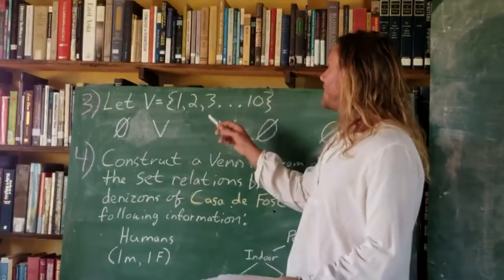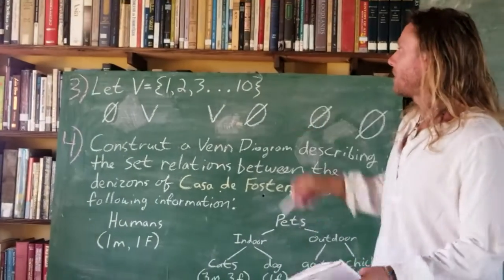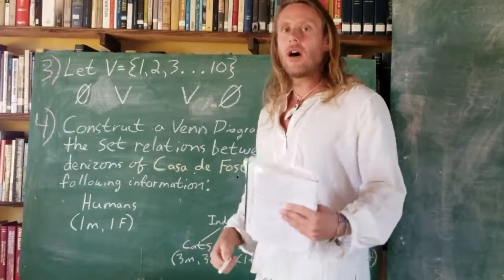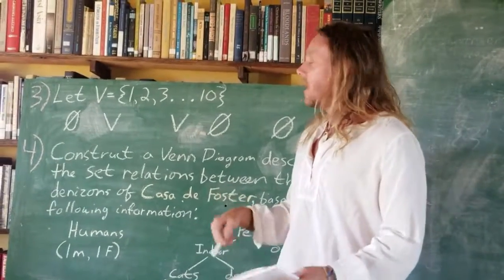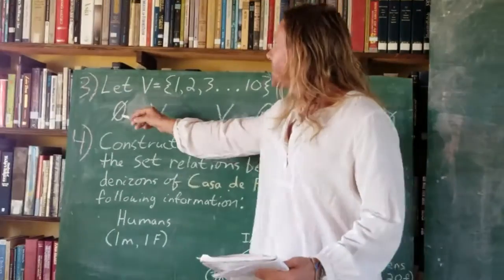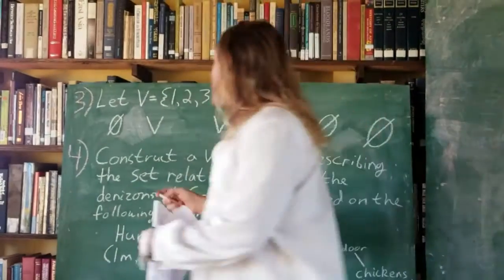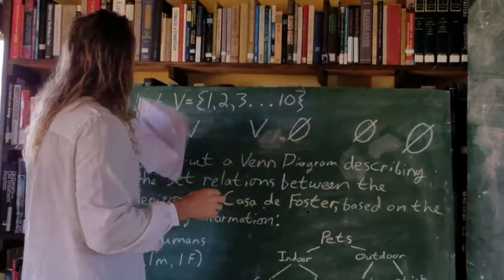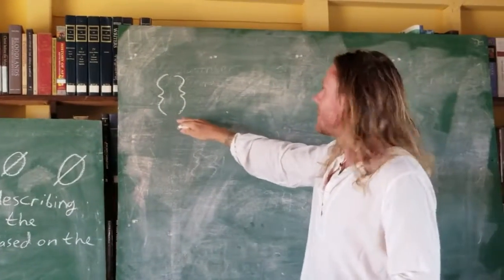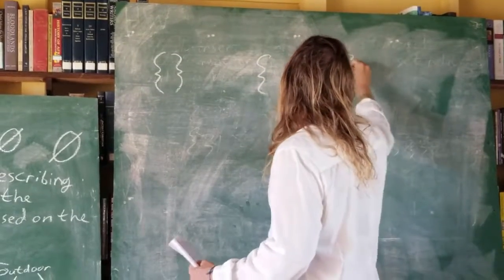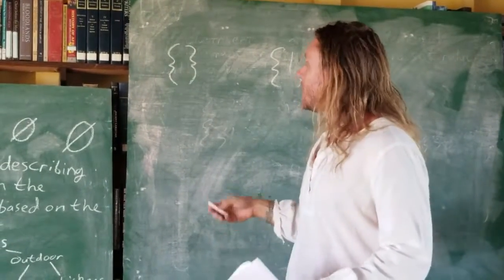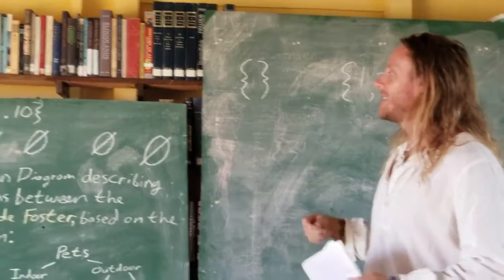Problem 3: let V equal the set 1, 2, 3 through 10. We're dealing with the empty set. Our first question: is the empty set a subset of V? Based on our discussion, the empty set is a subset of all sets. So of course the empty set is a subset of V, just like it is of all sets.